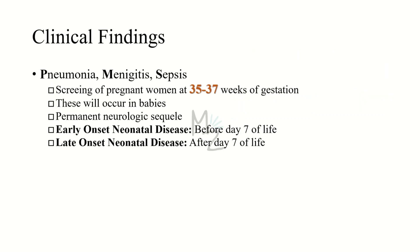Clinical findings: streptococcus agalactiae is mainly responsible for causing neonatal diseases but can also cause diseases in adults. In neonates it causes pneumonia, meningitis, and sepsis — you can memorize this by PMS. Pregnant women need screening at 35 to 37 weeks of gestation, because if infection is detected at that time, intrapartum penicillin is given to reduce complications. These three diseases can lead to permanent neurologic sequelae.